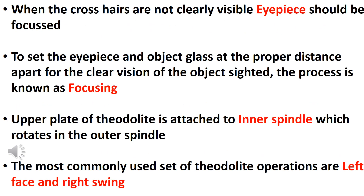When the crosshairs are not clearly visible, the eyepiece should be focused. To set the eyepiece and object glass at the proper distance apart for the clear vision of the object sighted, the process is known as focusing.